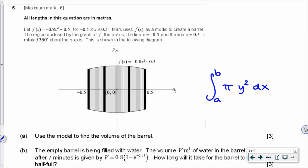So we just need to fill in integral from negative 0.5 to positive 0.5 pi, the function, which is negative 0.8x squared plus 0.5, and that must have a squared on it, and then dx.